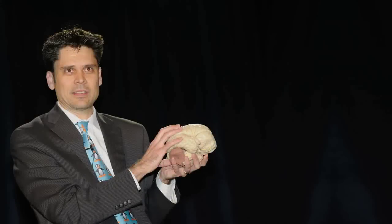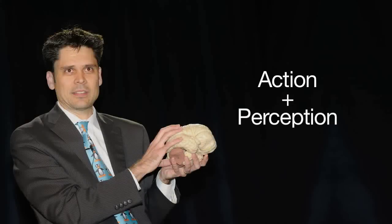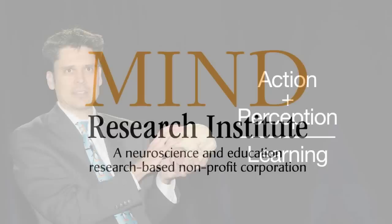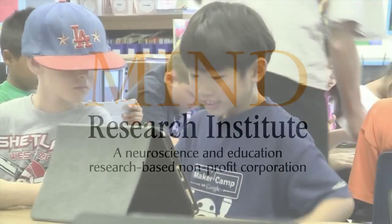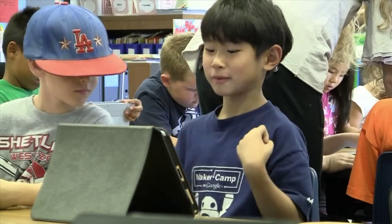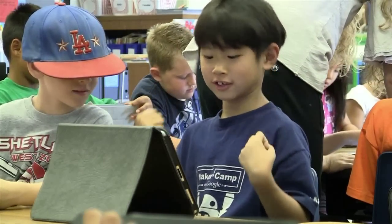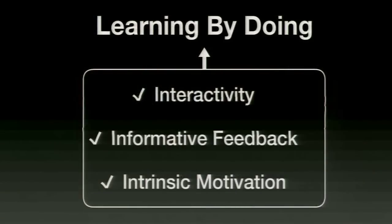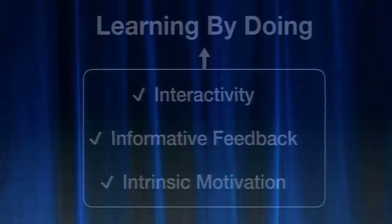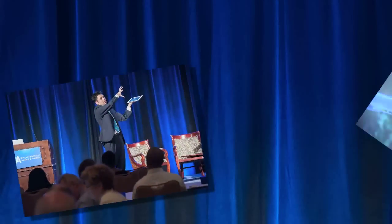The reason you have a brain is to connect action and perception, and that is the basis of all learning. All learning happens through something called a perception-action cycle, where you do some action, you perceive it, and based on that perception, you adjust your action.